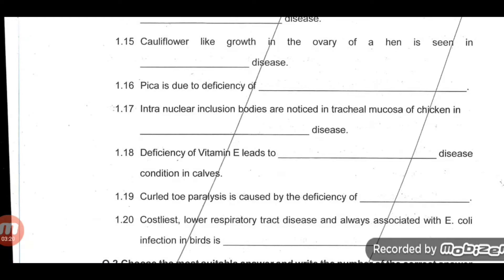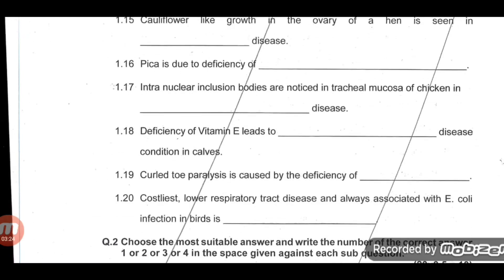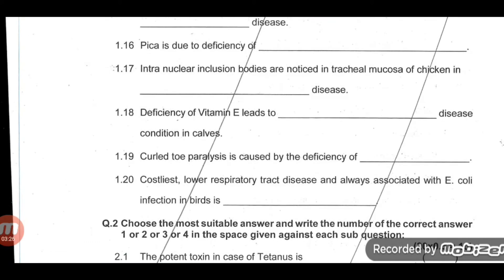Question 13: Pica is due to deficiency of phosphorus. Question 15: Intranuclear inclusion bodies are noticed in the tracheal mucosa of chicken in Infectious Laryngotracheitis (ILT) disease.